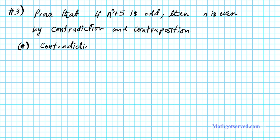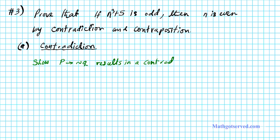So how do you carry out a proof by contradiction? To carry out a proof by contradiction, all you have to do is show that the hypothesis implying the negation of the conclusion results in a contradiction. If it results in a contradiction, then that means that p implies q is true. That's the whole idea behind proof by contradiction.